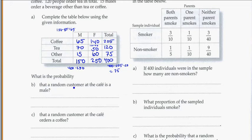So what is the probability a random customer at that cafe is a male? Well, here I have a total of 150 males out of 400. And that's going to get me 0.375. 150 males out of 400 total.